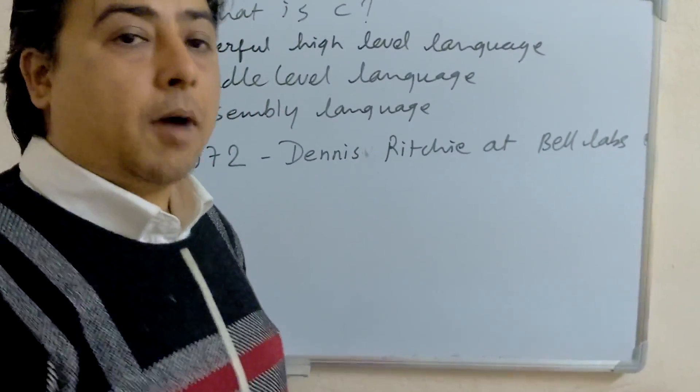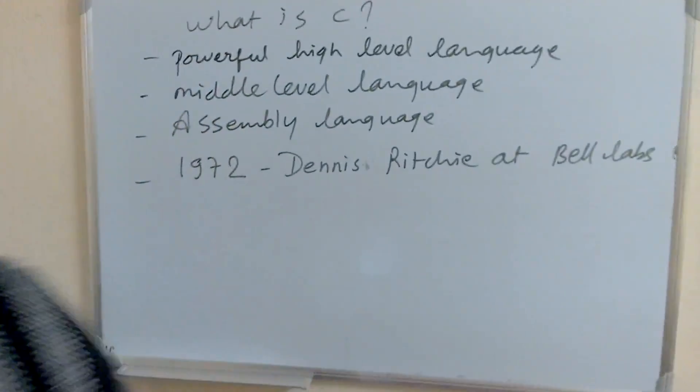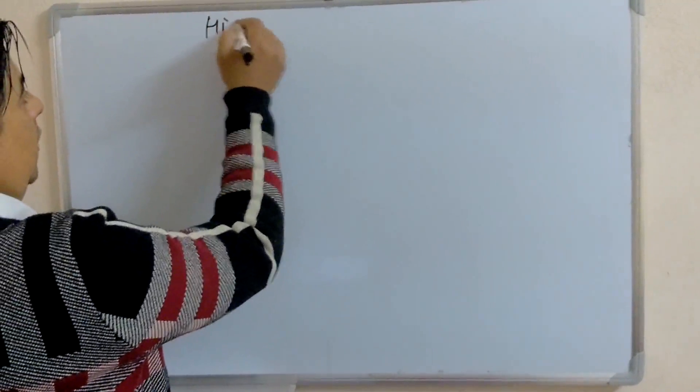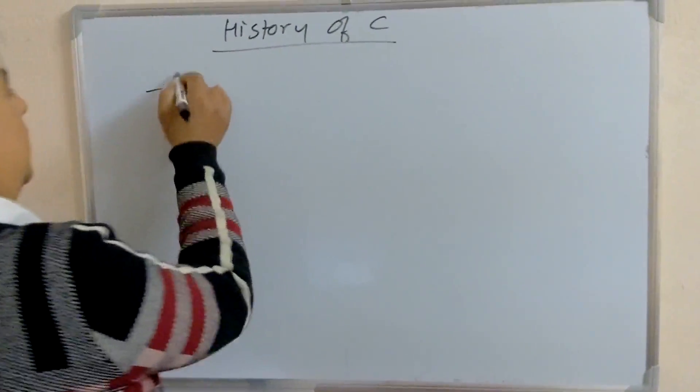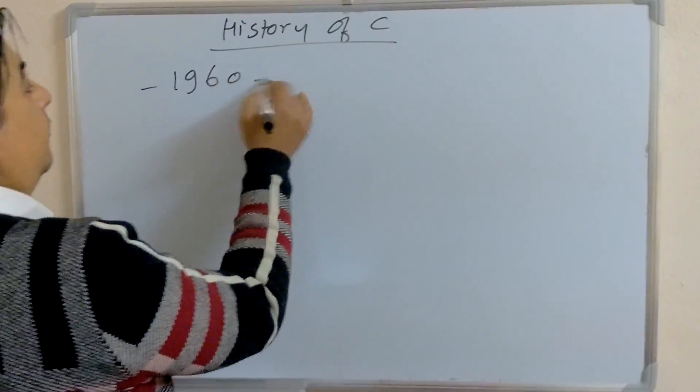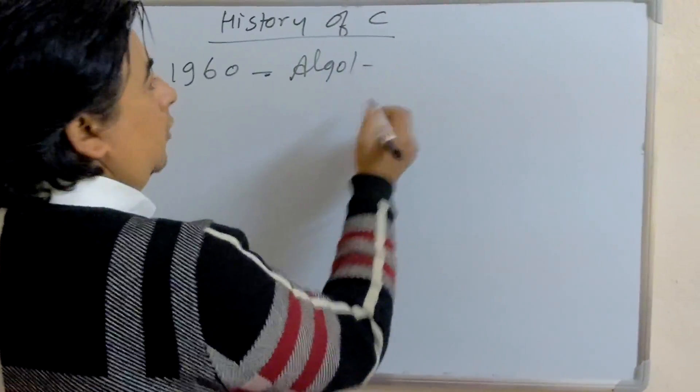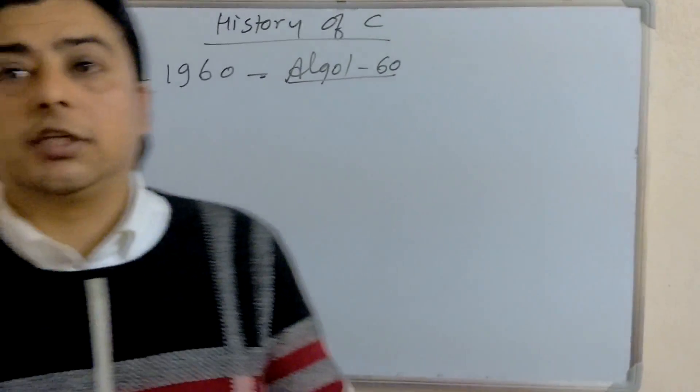Now, let's learn about history of C. In 1960, Algol was developed, which is known as Algol-60. By the period of 1960s, a large number of programming languages were developed.